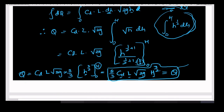There are many coefficient of discharge values for different devices. For a venturimeter, Cd is 0.98. For an orifice meter, Cd is in the range of 0.6. For a rectangular notch, Cd is in the range of 0.5 to 0.7 — the exact value will be given in the numerical problem for solving the discharge.